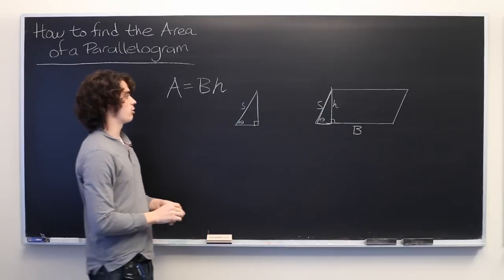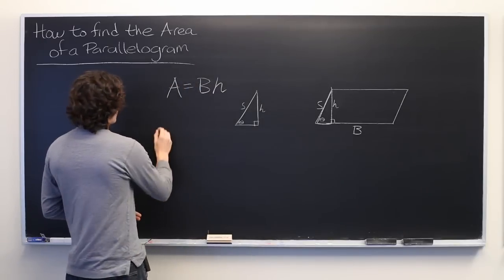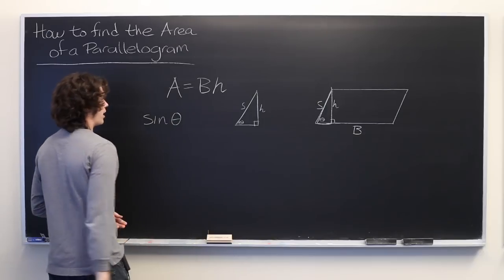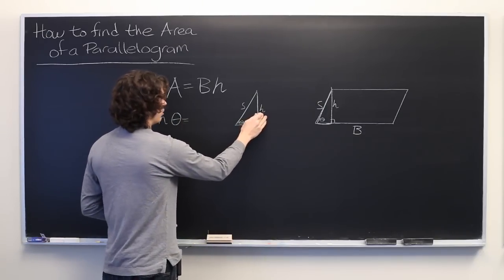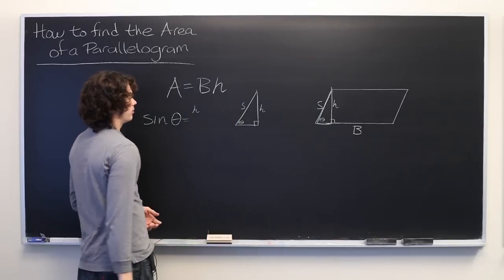Well, we can use some simple trigonometry to find the height. We recall that the sine of theta is equal to the opposite leg, which is H, over the hypotenuse, which is S.